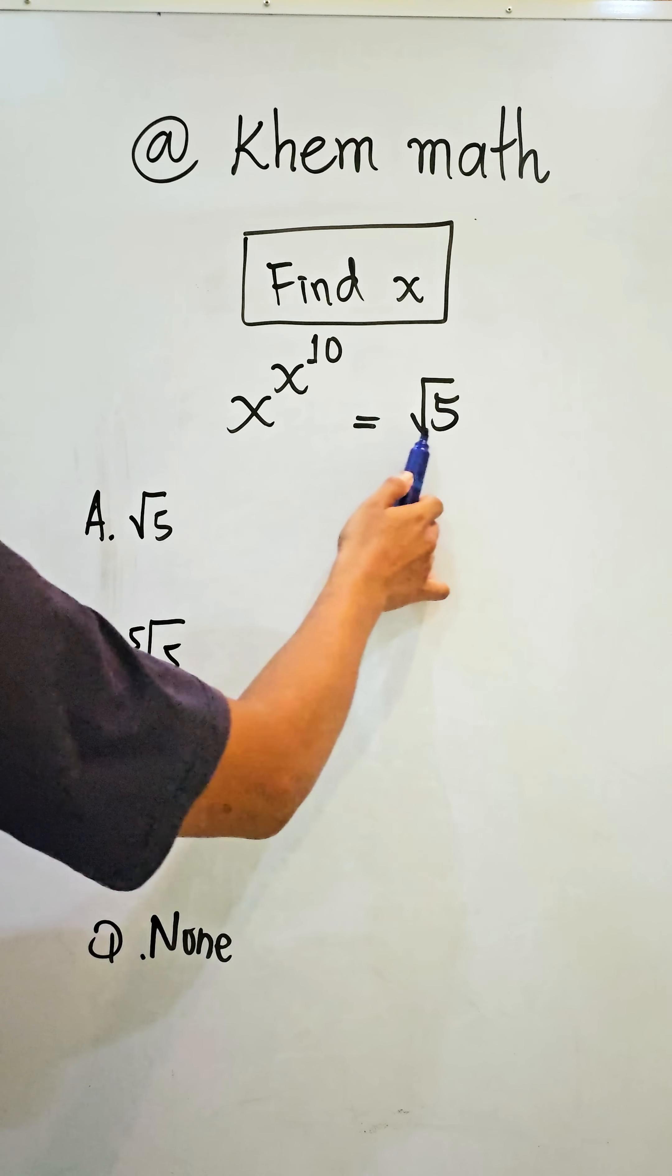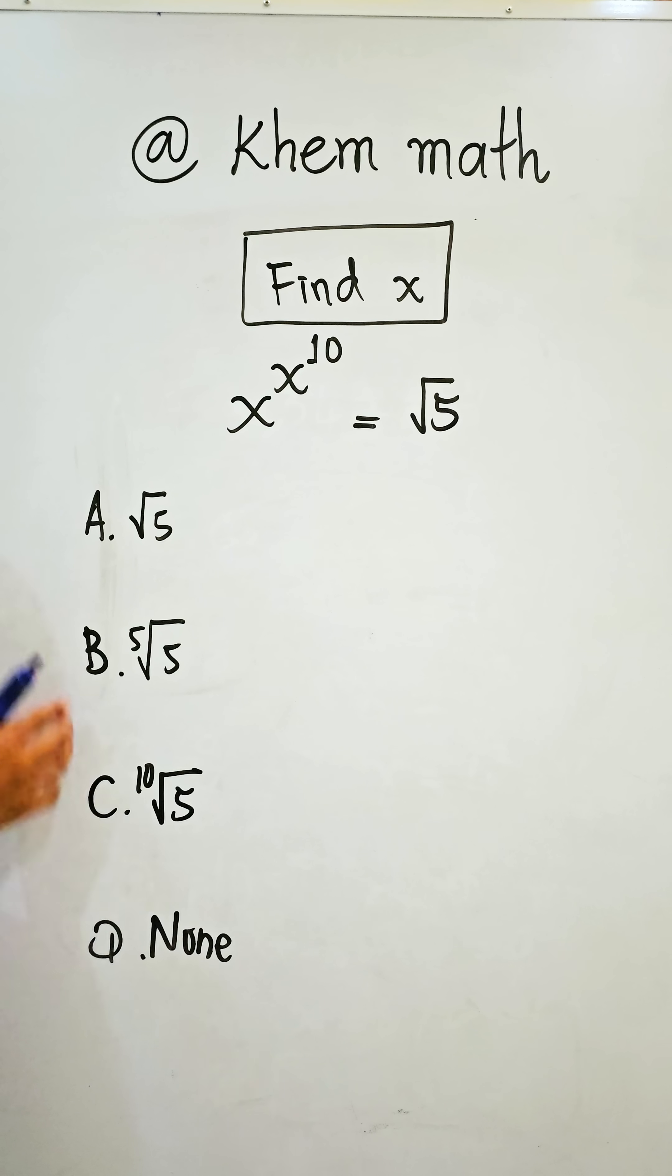x to the power of x to the power of 10 equals square root 5. The answer options are: A, square root 5; B, fifth root of 5; C, tenth root of 5; and D, none.